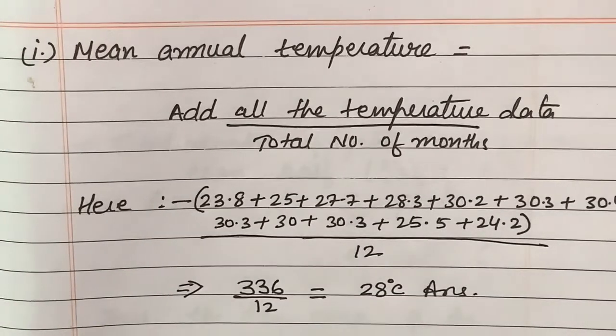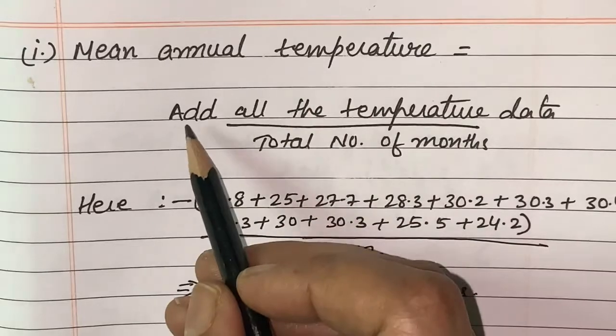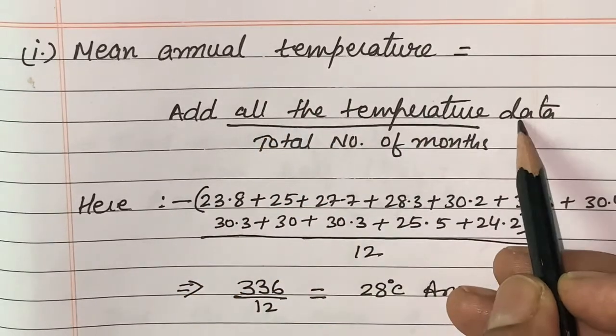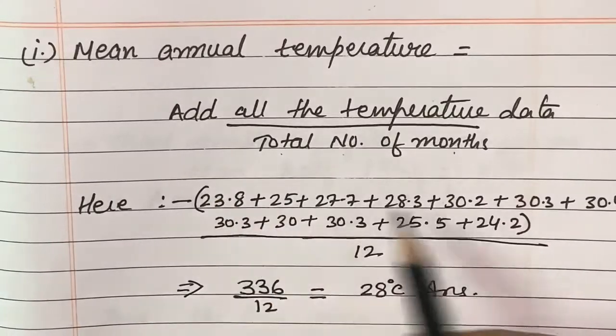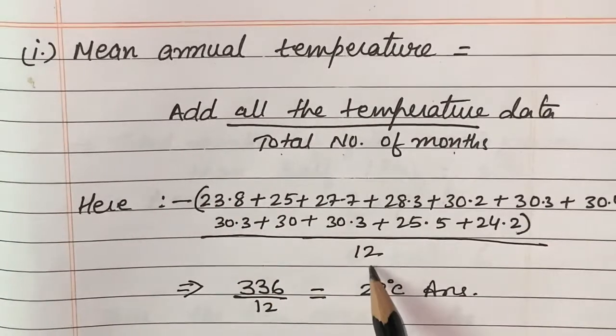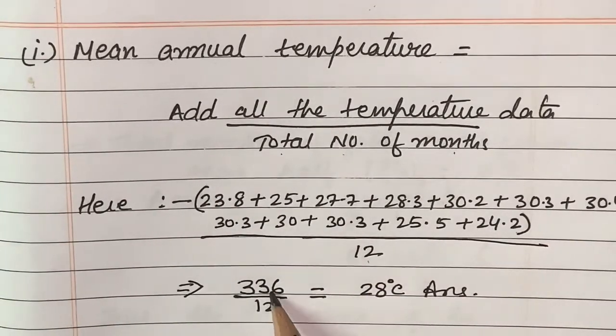It's clear in my solution I have added all the temperature data and divided by total number of months. That is, under bracket I have kept the values of temperature divided by total number of months, that is 12.